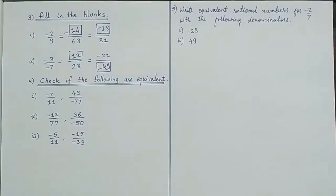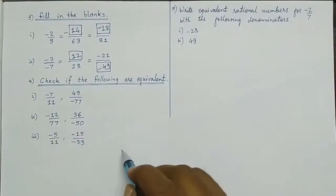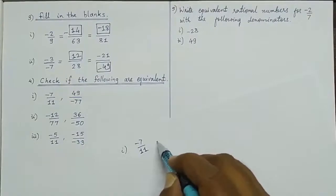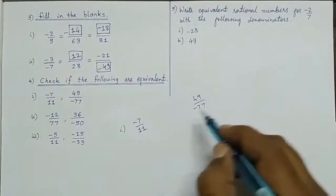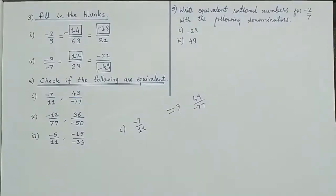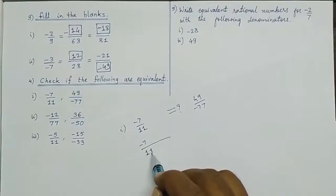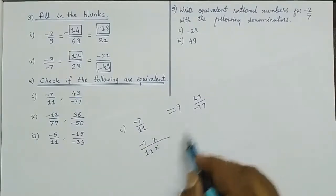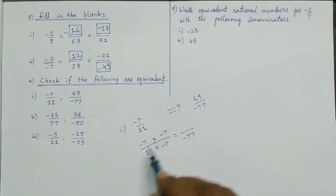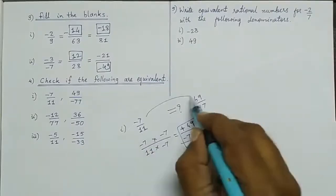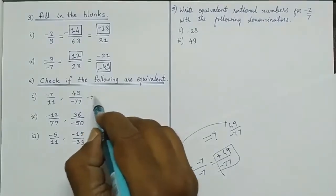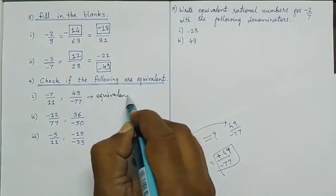Now check if the following are equivalent. First: minus 7 upon 11 and 49 upon minus 77. By the property, if I multiply minus 7 to the denominator of the first fraction: minus 7 into minus 7 equals minus 77. Then minus into minus plus, and 7 sevens are 49. So by the property these two are equivalent.